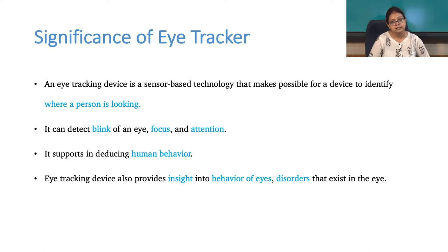From 2000 till today, eye tracking has been widely used in various applications and research, ranging from communication with disabled individuals to usage in ophthalmology. It acted as an input device in computer games and is able to explain transformation of perceptual, social, and cognitive abilities. Now let us identify the significance of eye tracker — why do we need it?